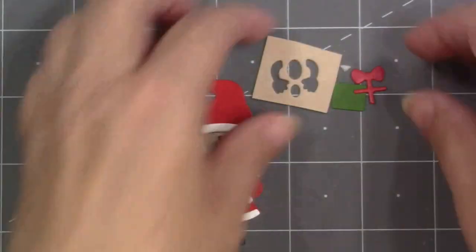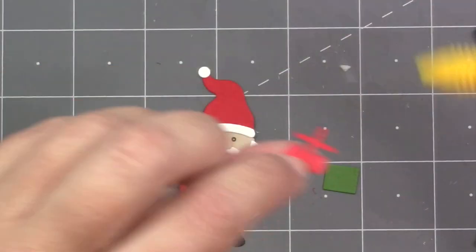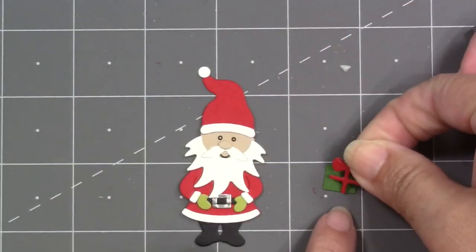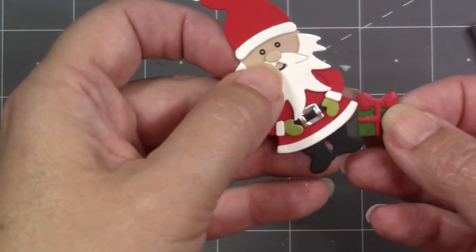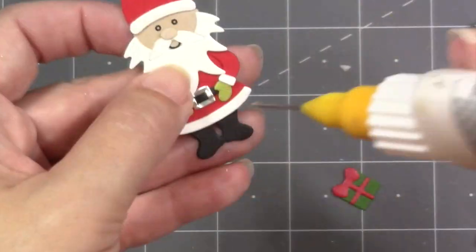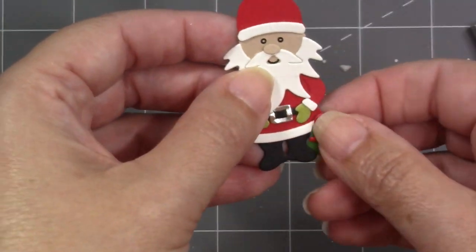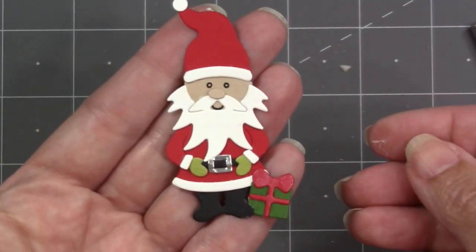There are two dies in the set that will combine to make a cute little Christmas present. And if you didn't glue the mittens down, you can tuck that under the mittens and Santa can be holding the present. But another spot that looks really good is just attached kind of between the boot and the edge of the coat.